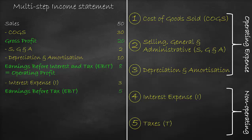Finally, we deduct the fifth and final expense, which is tax at 30%, meaning the tax rate is 30%. We calculate tax as tax rate times earnings before tax: 30% times $5 million equals $1.5 million. This gives us the fourth level of profit, called net income or net profit of $3.5 million, calculated as $5 million minus $1.5 million.